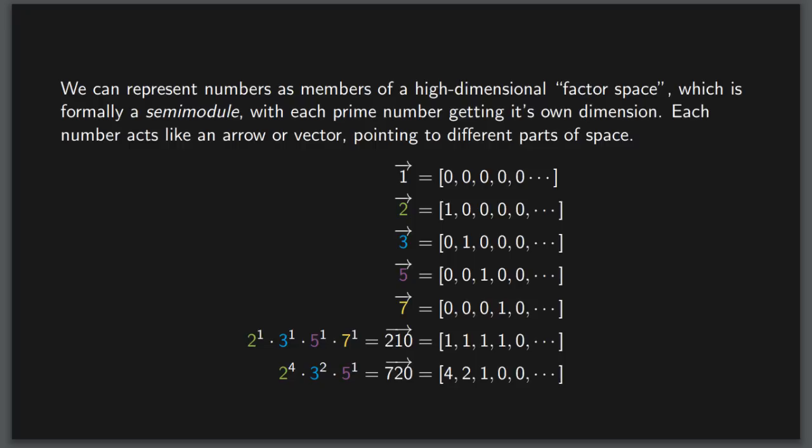What this gives us is a new way to represent numbers in what I am calling factor space. A high-dimensional semi-module, where each prime is given a dimension of its own. We can represent the natural numbers using lists of prime powers. For example, 210 is a factor of 2, 3, 5, and 7, and so gets a 1 in each of those entries. Visually, these can be thought of as arrows or vectors pointing in the space. As such, we denote the members of this space with arrows over the number which it represents.